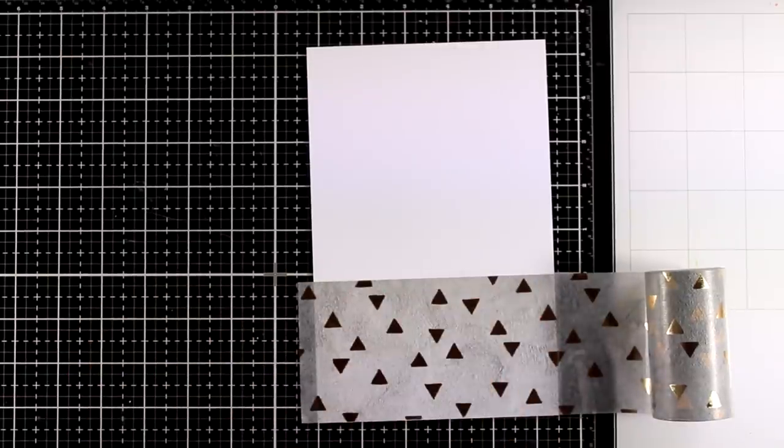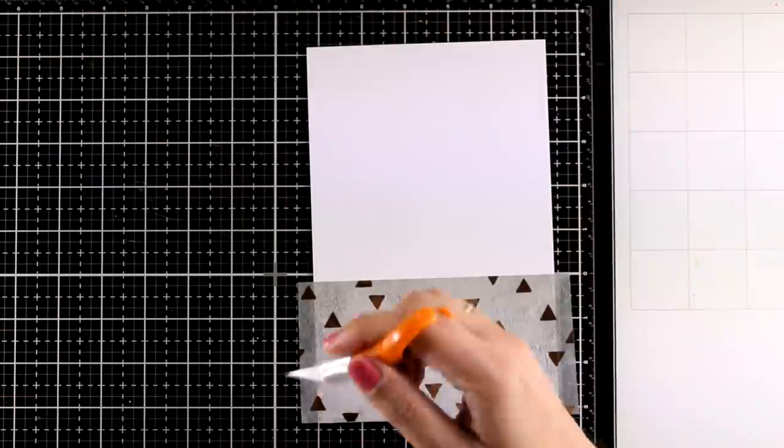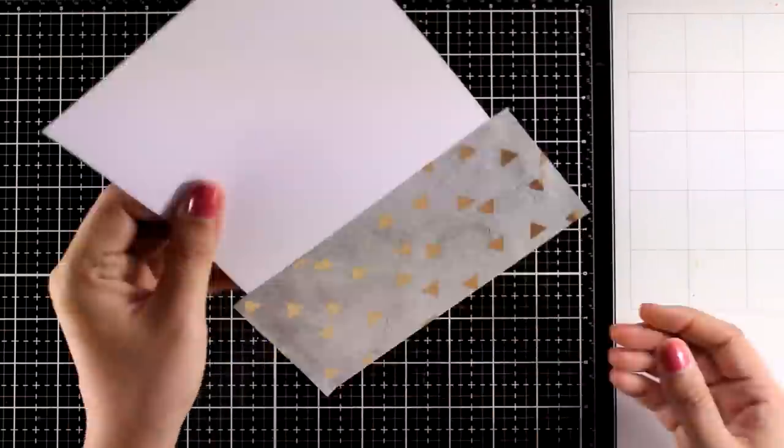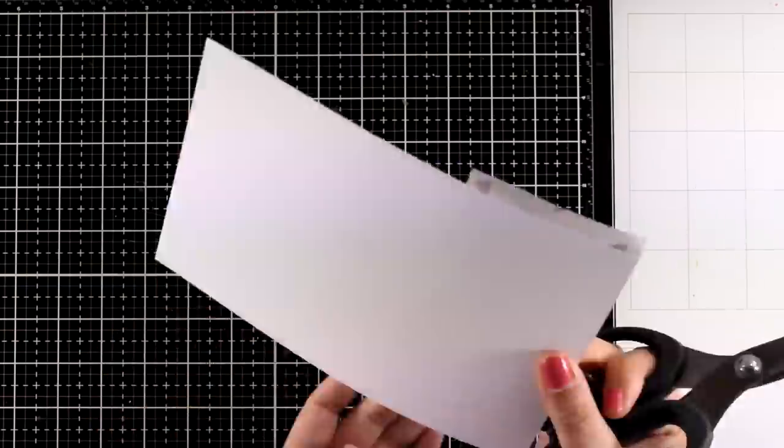So I am sticking a piece of this washi tape on a white cardstock and I want this to be white at the background because the washi tape is semi-transparent and it's going to pick up some of the background color.